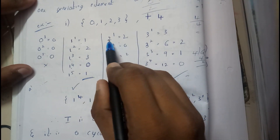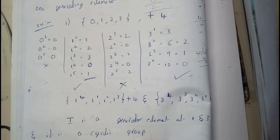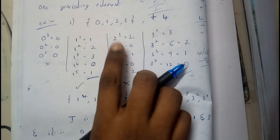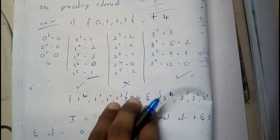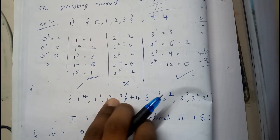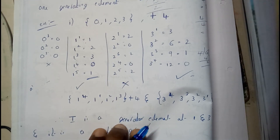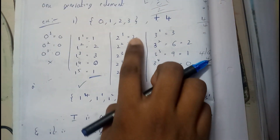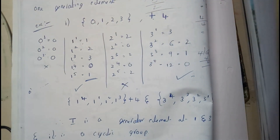For element 2: 2^1 = 2 mod 4 = 2; 2^2 = 2+2 = 4 mod 4 = 0; 2^3 = 2+2+2 = 6 mod 4 = 2. So the powers of 2 only give {2, 0, 2, 0, ...} — it keeps repeating 2 and 0, so 2 does not generate all elements.